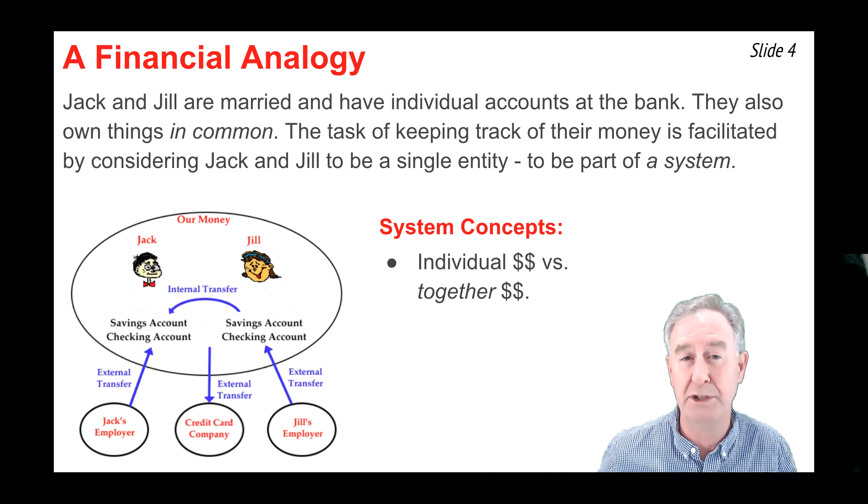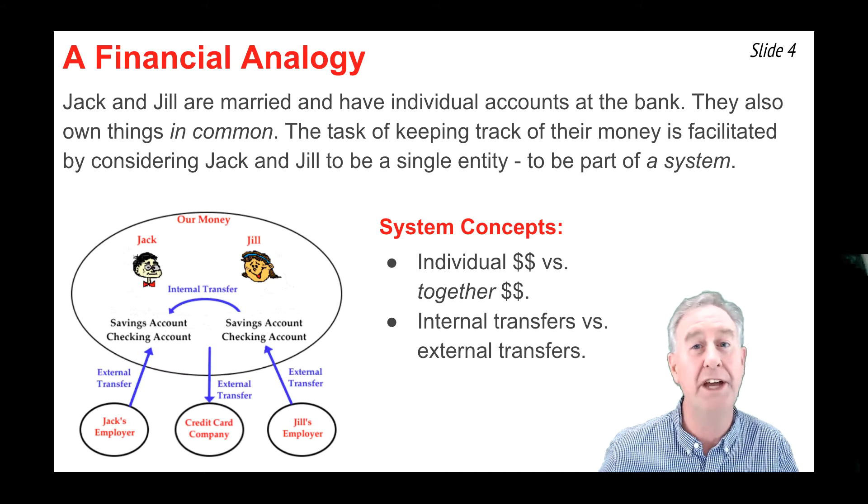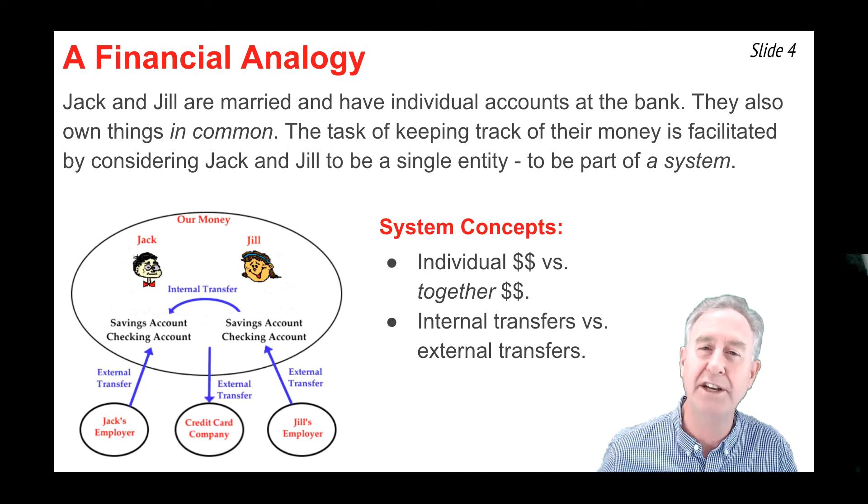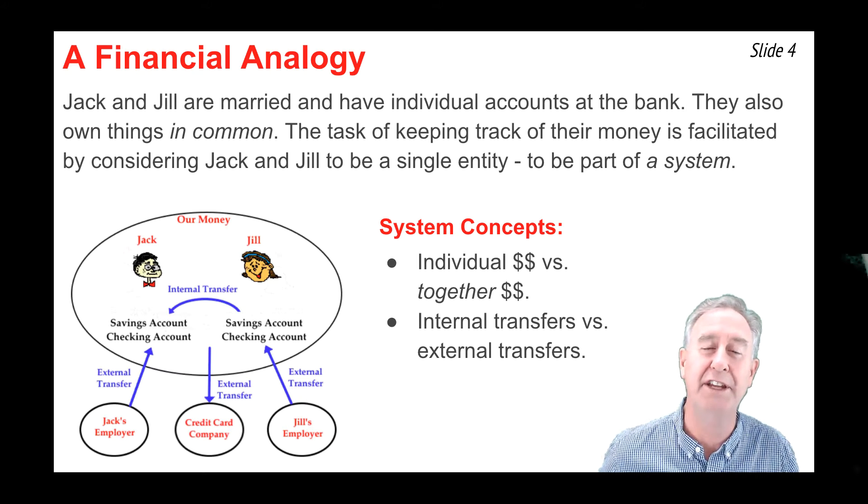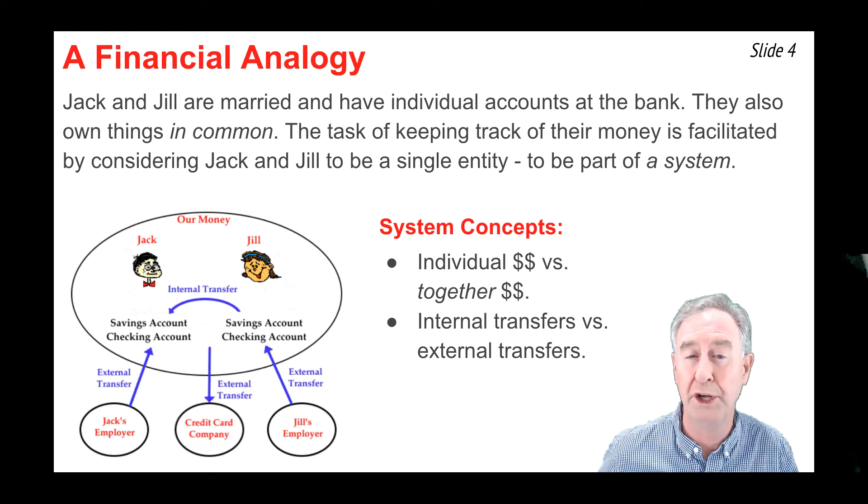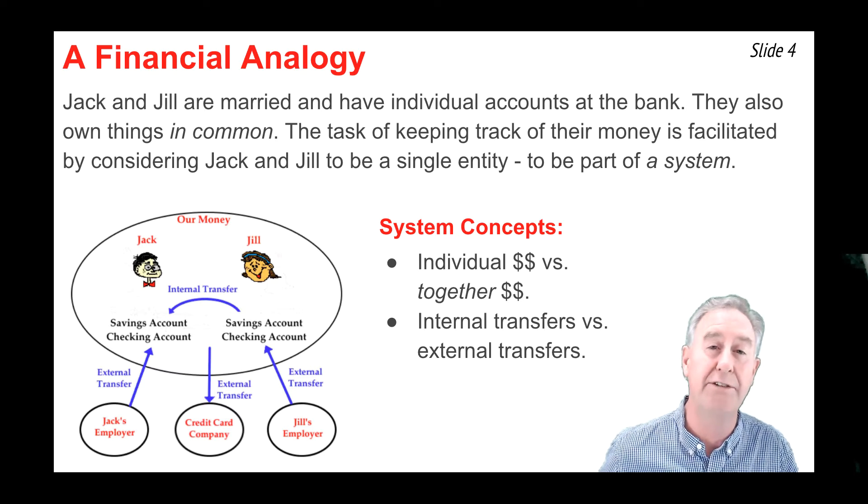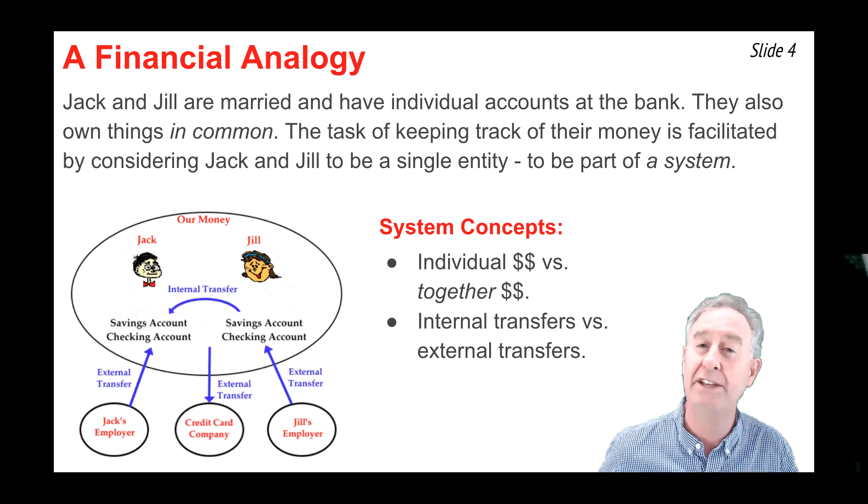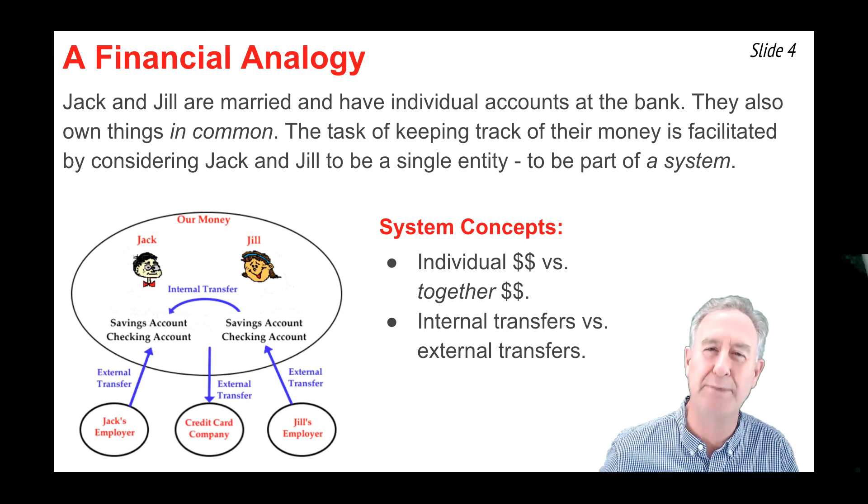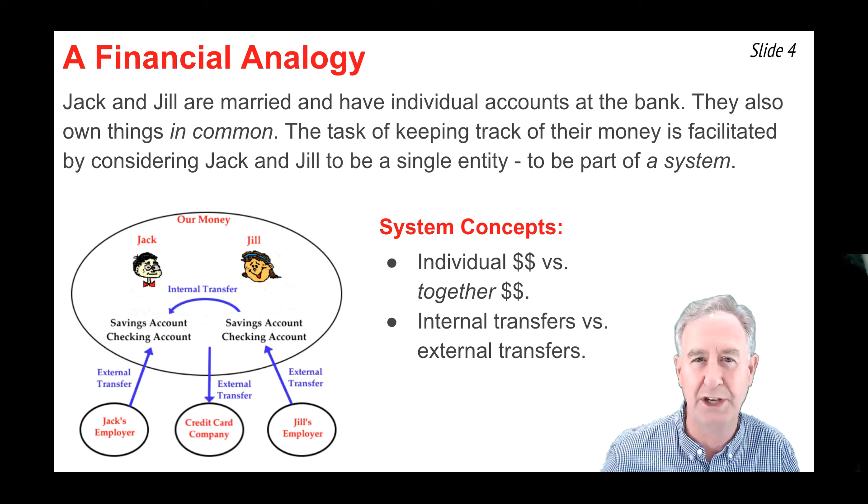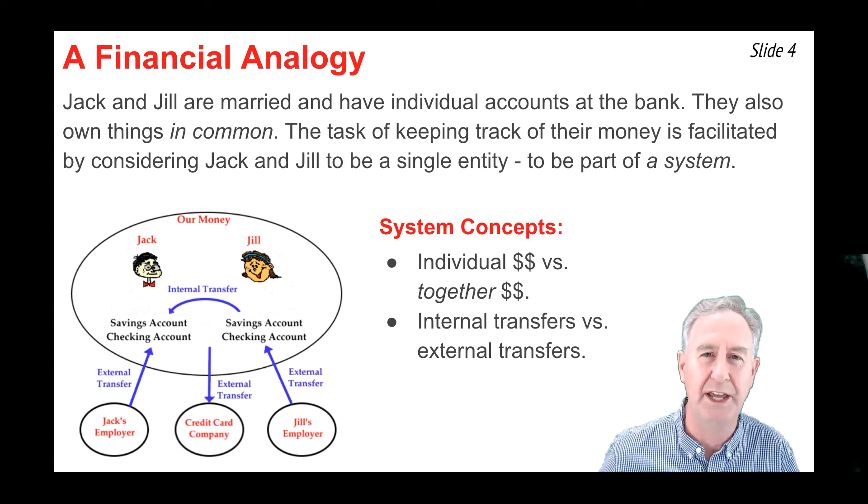If there's a transfer of money from Jill's account to Jack's account, well that's an internal transfer and it doesn't affect the amount of money possessed by the system. On the other hand, if there's a transfer from Jill's employer to her savings account or from Jack's employer to his savings account, well that's an external transfer and that does change the amount of money possessed by the system. The same can be said of the external transfer to the credit card company. It changes the amount of money possessed by Jack and Jill.